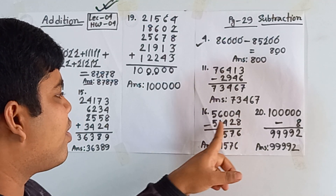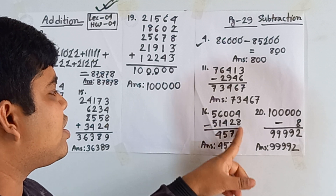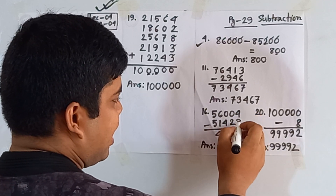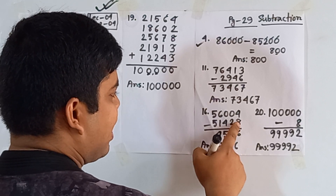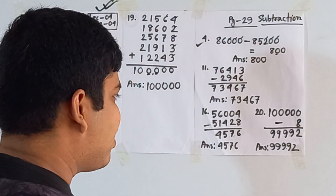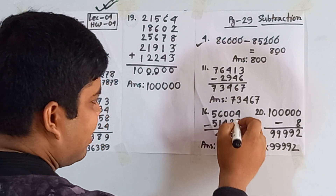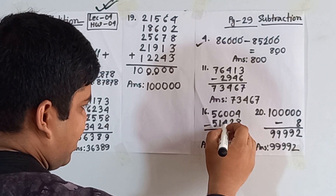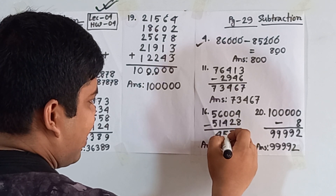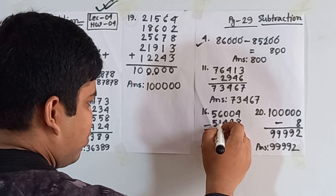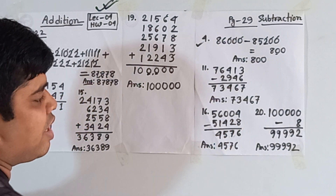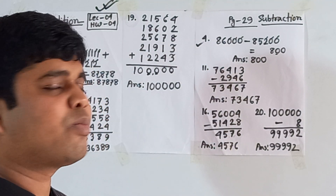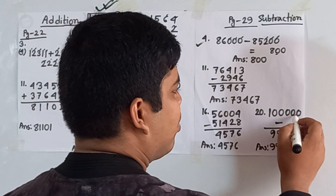Question number sixteen: 56,004 minus 51,428. Ones place: 4 is smaller than 8, borrow — 14−8=6. That 1 added to 2 makes 3; 3 subtracted from 10 needs 7, carry 1. That 1 added to 4 makes 5; 5 subtracted from 10 needs 5, carry 1. That 1 added to 1 makes 2; 6−2=4. Leading zero is not written. So the answer is 4,576.